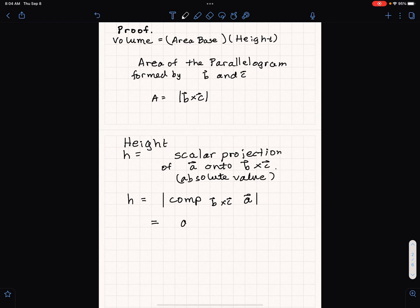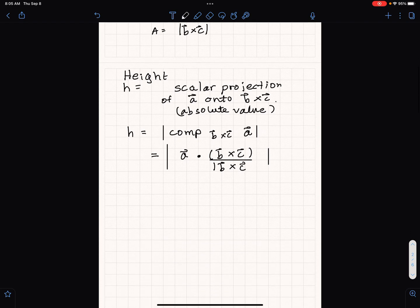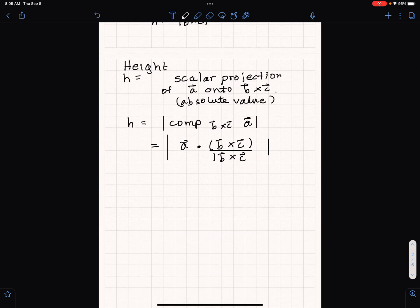It is A dot B cross C divided by length of B cross C. That is the formula that is using the formula for the scalar projection of A onto B cross C.